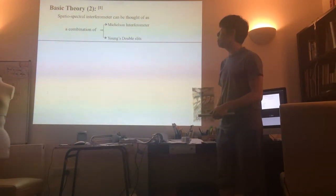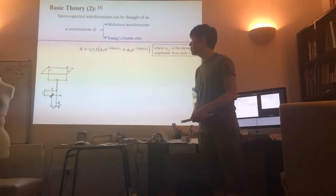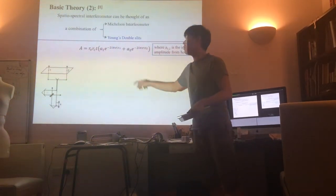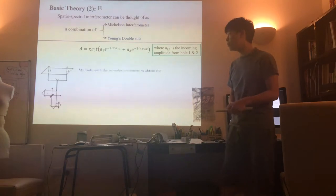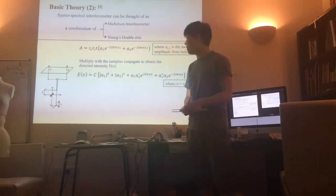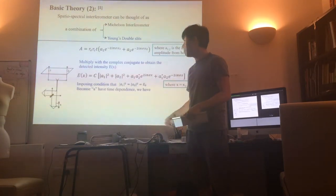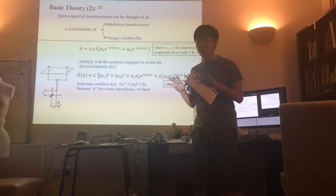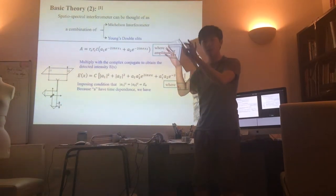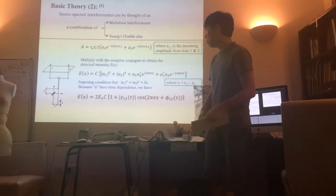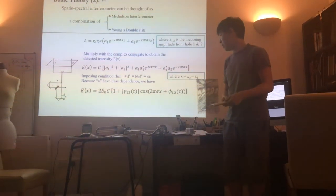Things become more interesting when we combine that with Young's double slit. We get a similar expression, but now we have two pinholes, hence the A1 and A2. We do the same trick to obtain the intensity. We can impose the condition that A1 and A2 are roughly the same since we're looking at roughly the same region on Earth. Therefore, we get this expression here.